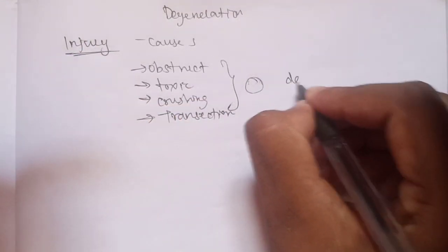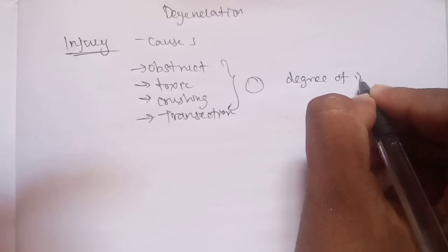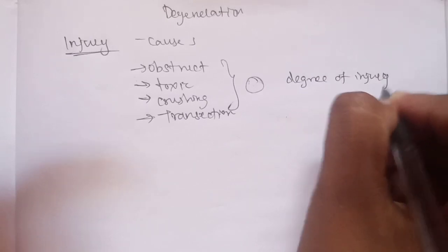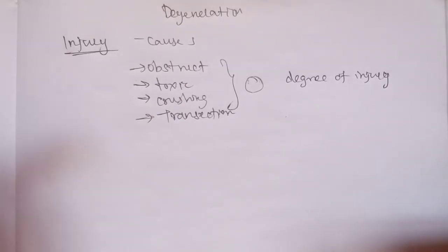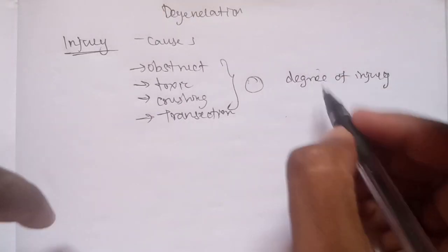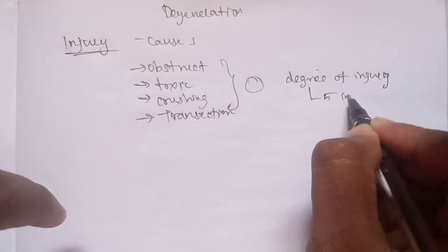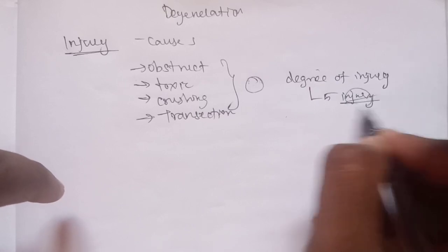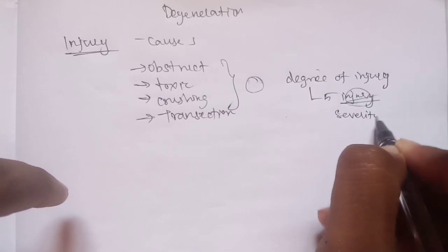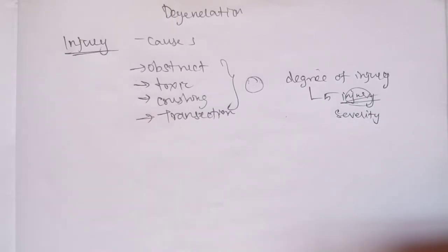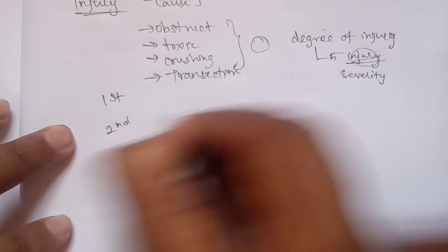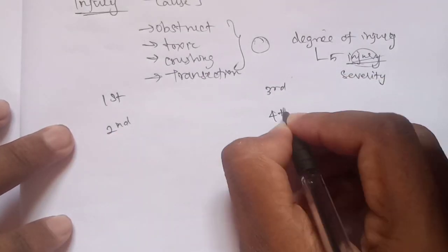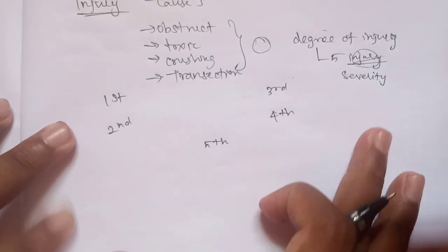So we have injury. We will consider the degree of injury — what level is the injury? The severity has 5 degrees. The first degree, second degree, third degree, and fourth degree — the severity is classified into 5 degrees total.